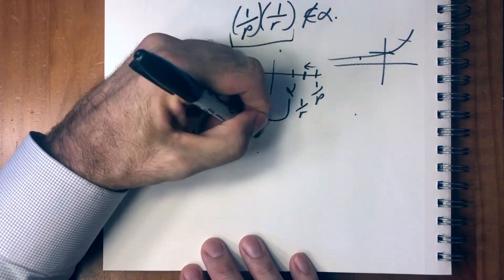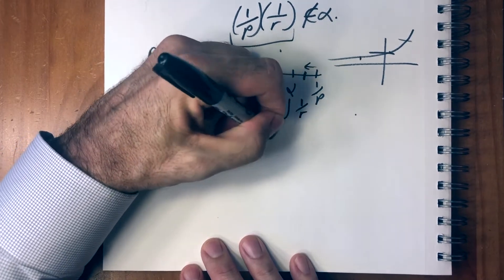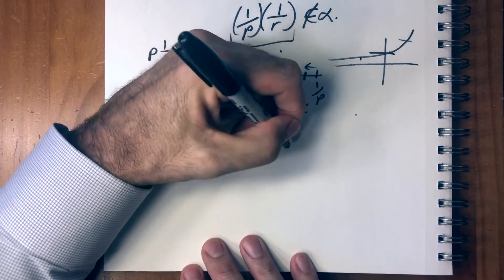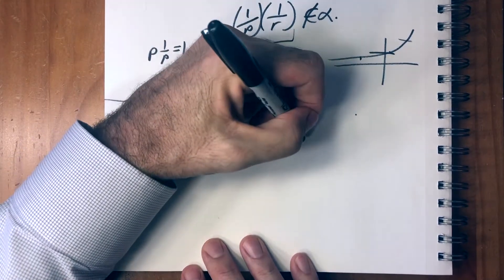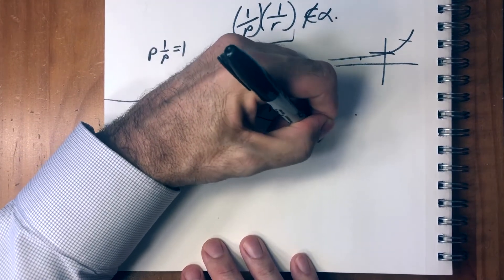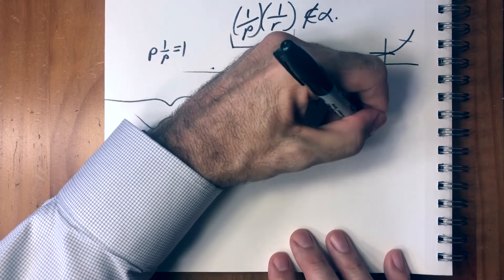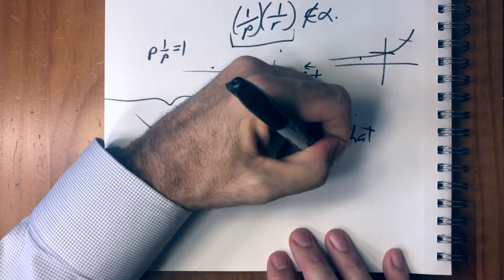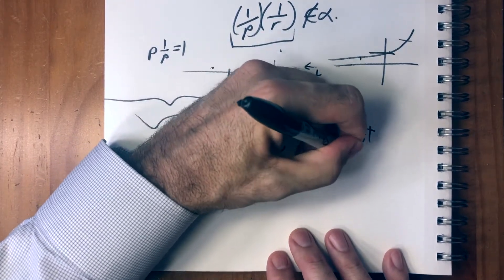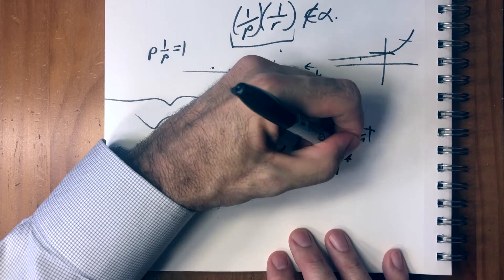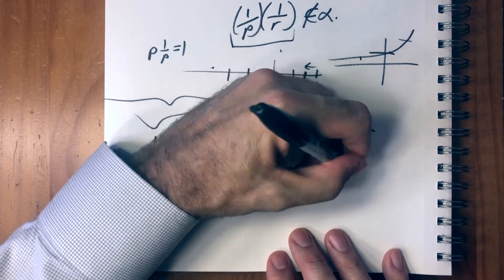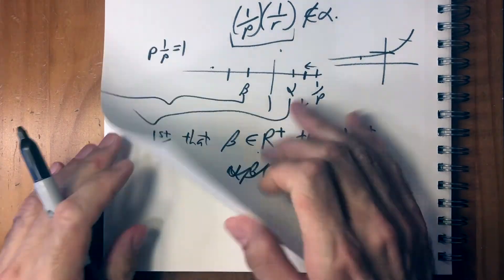In order to do this we have to show two things: first, that beta is an element of R (the reals), and second, that alpha times beta equals one. First we have to verify properties one, two, and three.